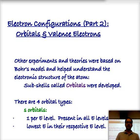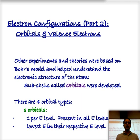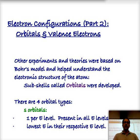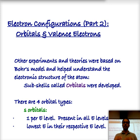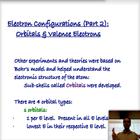Hi, welcome to video number 7. Today we're going to continue talking about the electron and how it's arranged around the nucleus. As you may remember, Bohr told us that the electron could only exist in certain energy levels, and in order to move up or down it had to gain very specific energies.